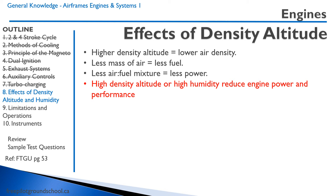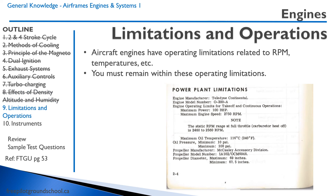High density altitude — meaning low air density — has a dramatic effect on engine performance. A higher density altitude means lower air density. If the air density is lower, there is less mass of air. To keep the correct fuel-air mixture, less air means less fuel, and less fuel and air means less power. It's important to remember that high density altitude and high humidity both reduce engine power and performance. Aircraft engines also have operating limitations related to maximum RPM, maximum temperatures, and pressures, which you can find in the Aircraft Flight Manual or Pilot Operating Handbook under Limitations.